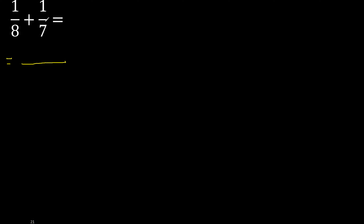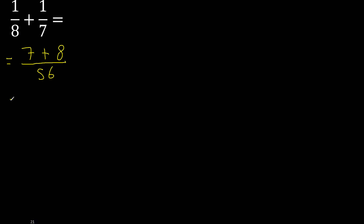First, multiply like this: 7 x 1 is 7, plus 8 x 1 is 8. Here, 8 x 7 is 56. 15.